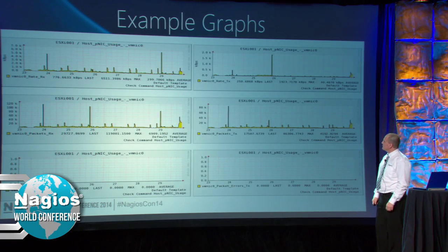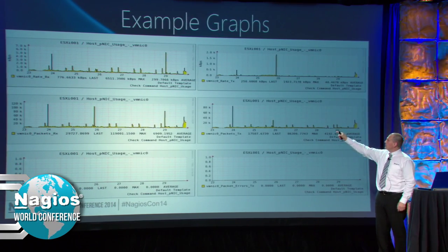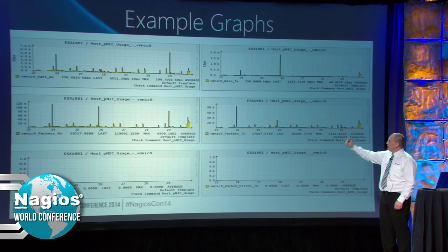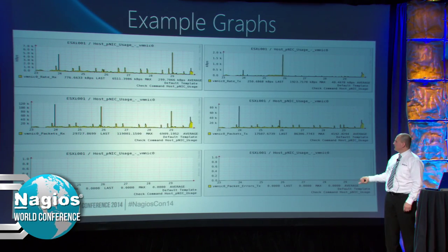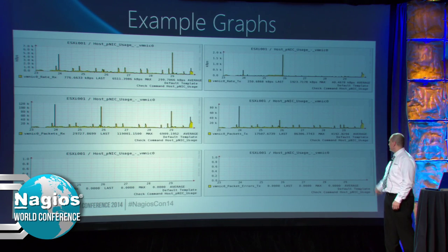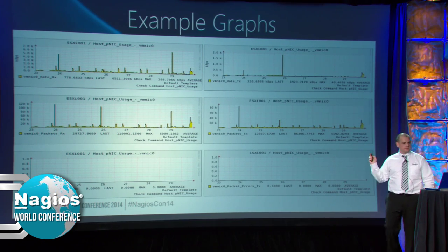Here are example graphs - I've got my read and write rate, my packets read and write, and my packet errors. And nothing's going wrong with my NICs.